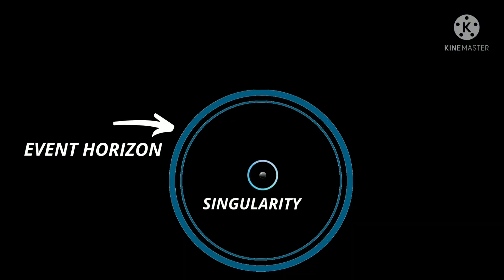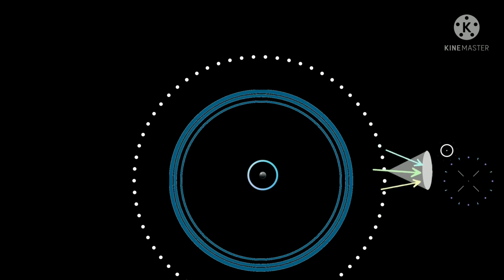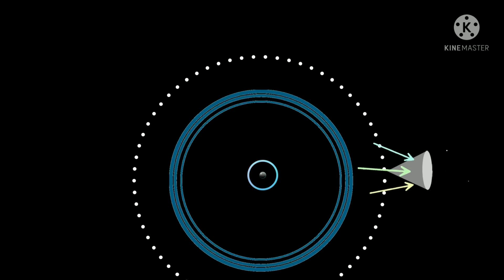For black holes, there are distances where light can get away. Photons emitted vertically can escape, while photons that are emitted horizontally get trapped in an orbit around the black hole known as the photon sphere.